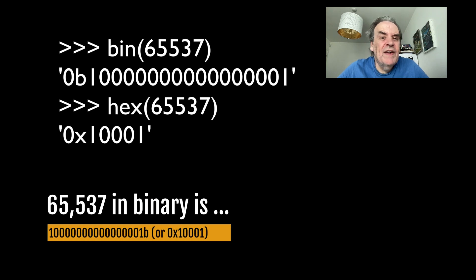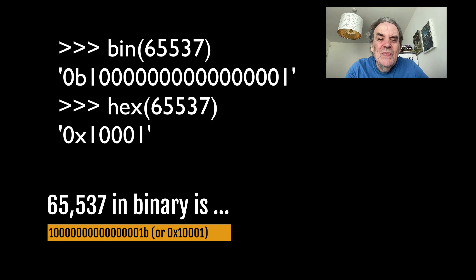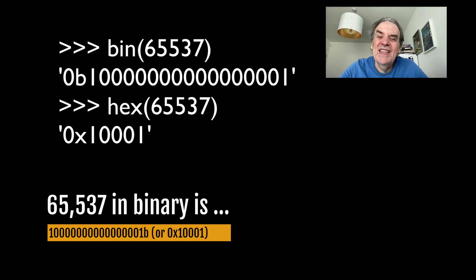The binary value of 65,537 is 1 0000 0000 0000 0001. That's the reason we don't say things in binary and we normally use hexadecimal. This number is efficient in producing ciphertext in RSA because of all the zeros.